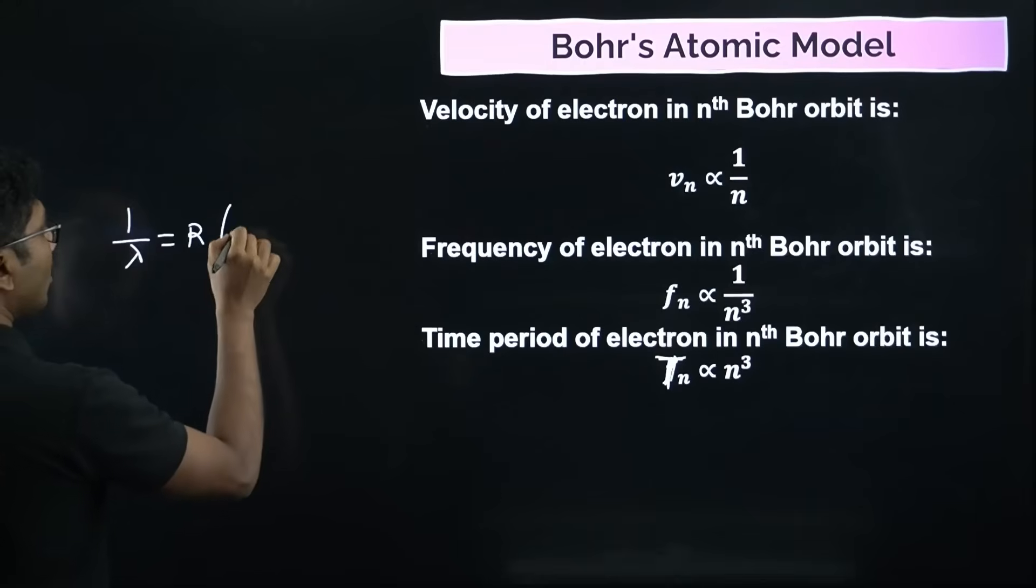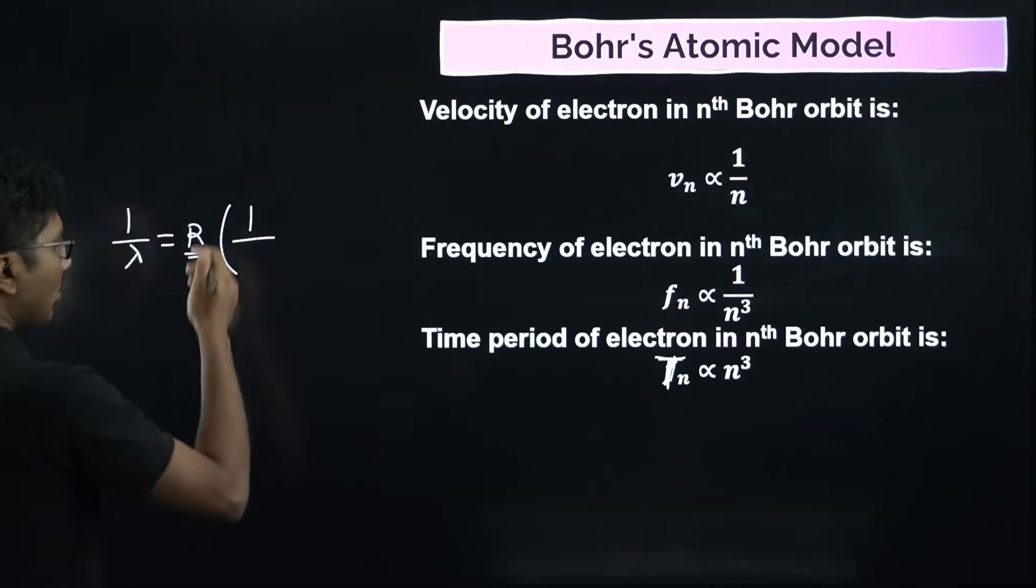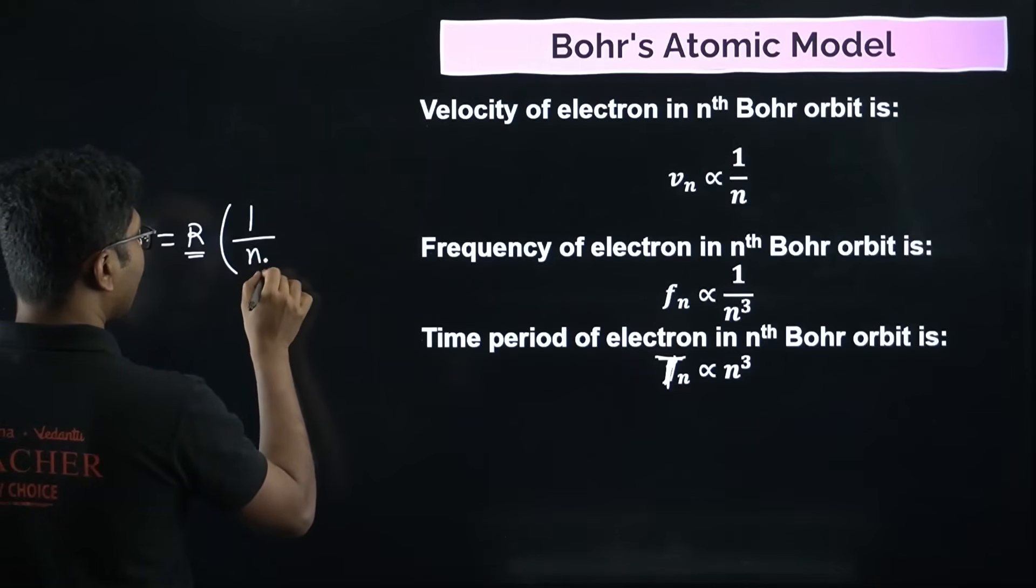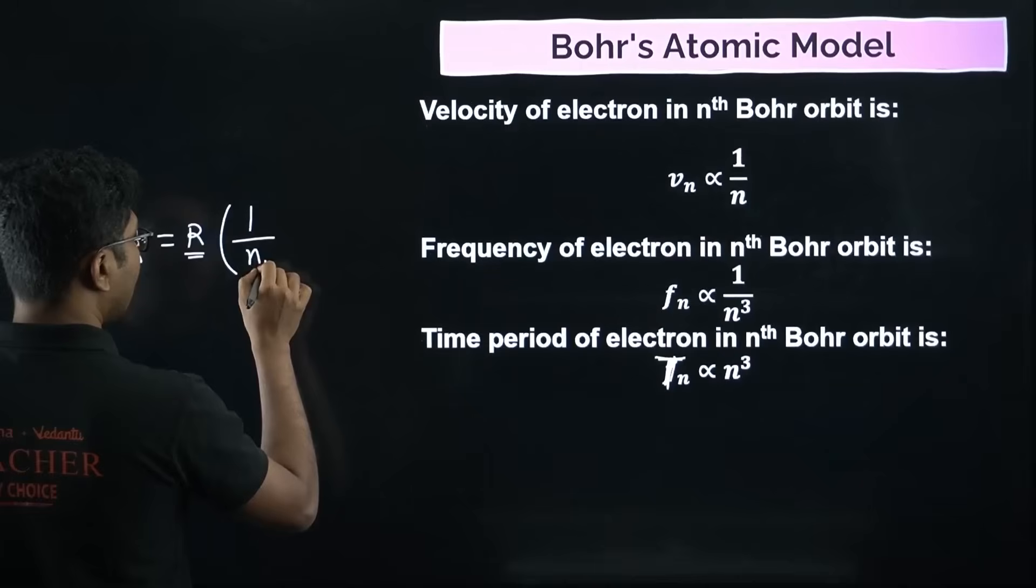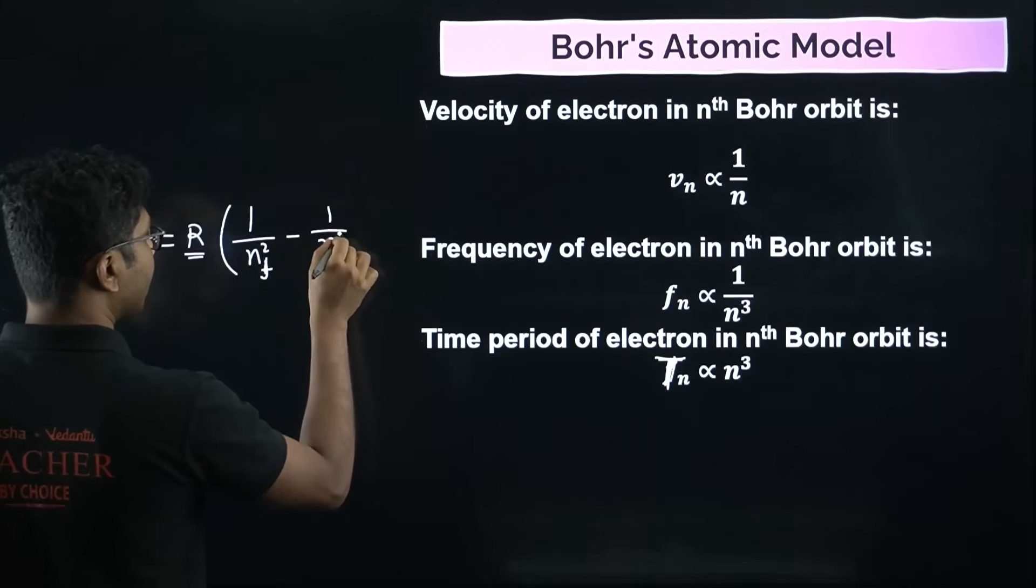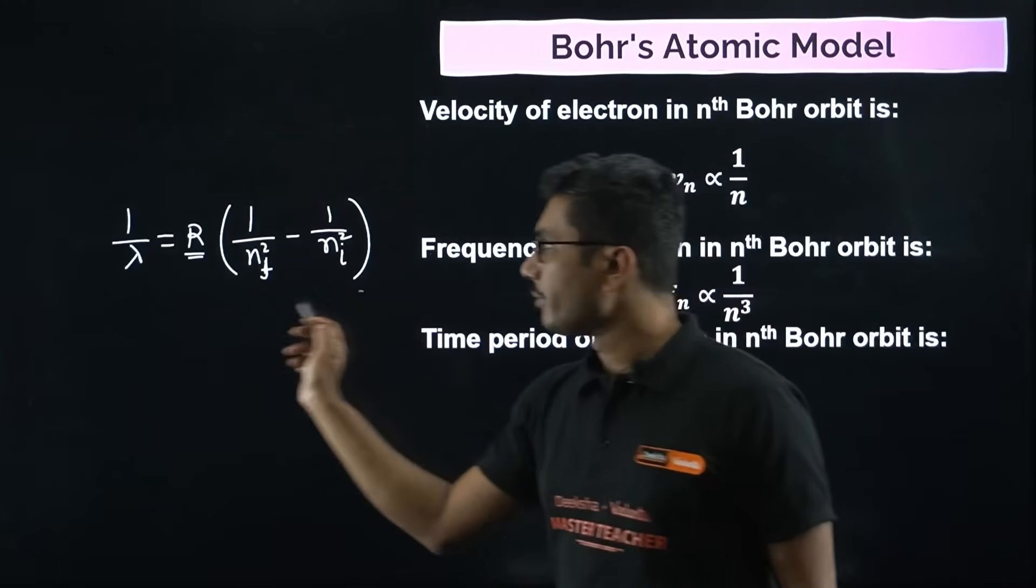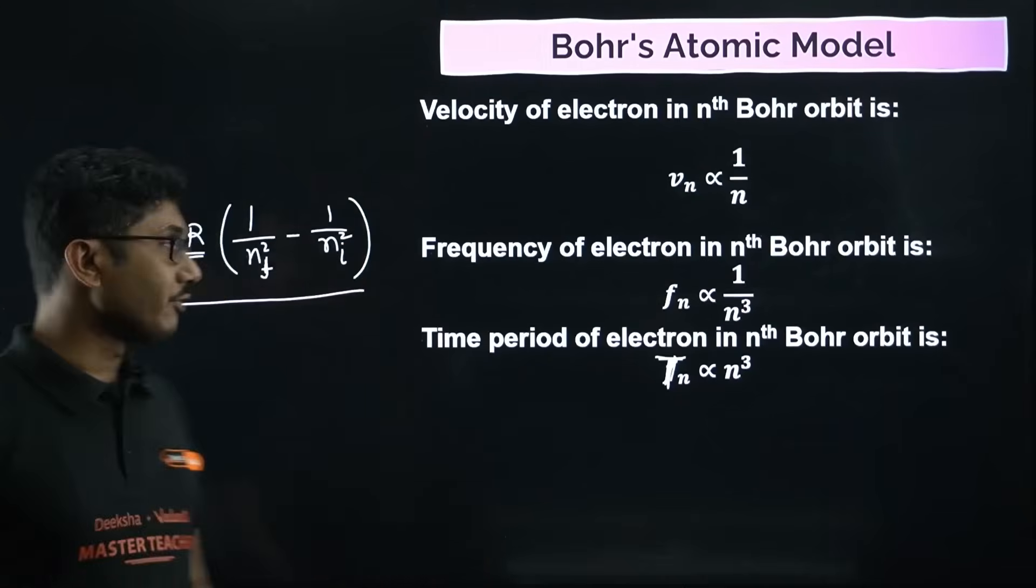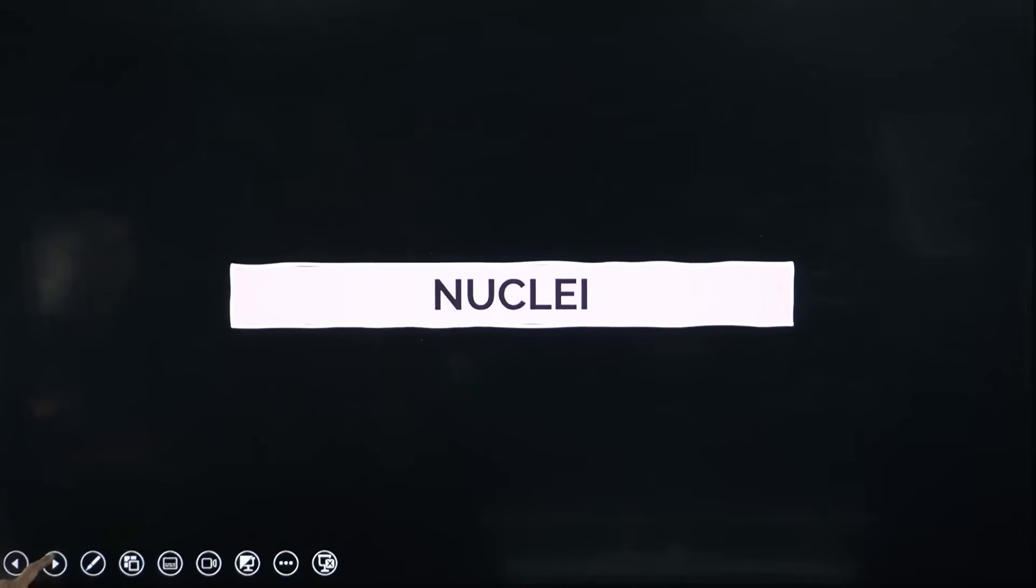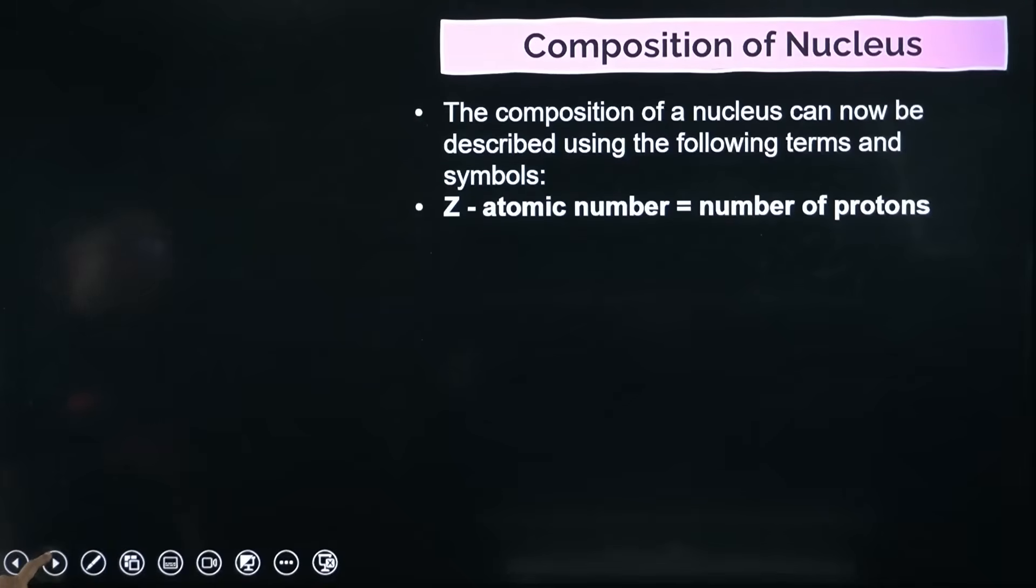Also, the wavelength is given by one over lambda equals R times one by n final squared minus one by n initial squared. They will provide you the value of the Rydberg constant. You have to remember this formula as well. Based on this also, a lot of questions came in COMEDK exam.